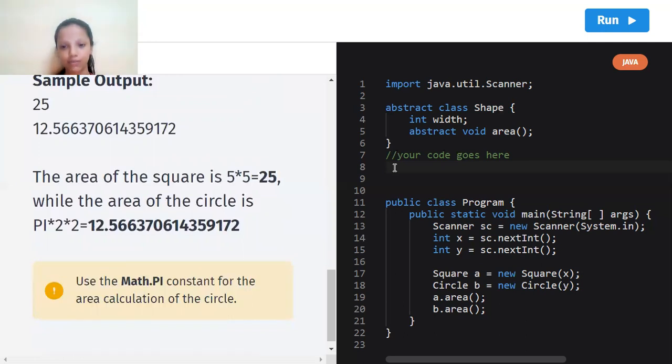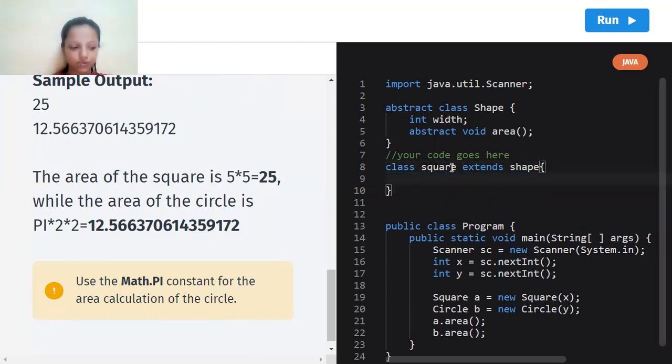So class Square extends Shape. If we don't write the words extends and Shape, then class Square will be considered a different class. Curly braces and let's go down.